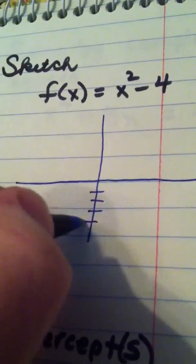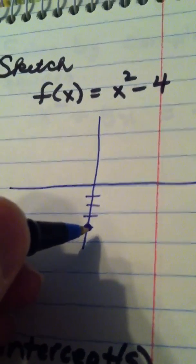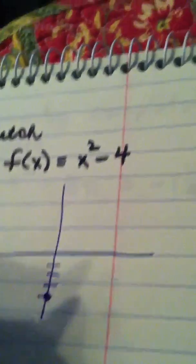So, my y-intercept, and coincidentally the vertex, would be down here at 0, negative 4. Something else I want you to notice here is that if you factor this function as x plus 2 times x minus 2,